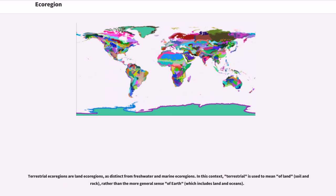Terrestrial ecoregions are land ecoregions, as distinct from freshwater and marine ecoregions. In this context, terrestrial is used to mean of land, rather than the more general sense of earth.